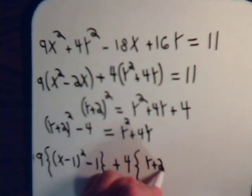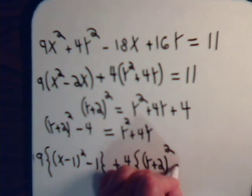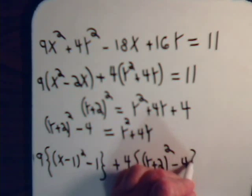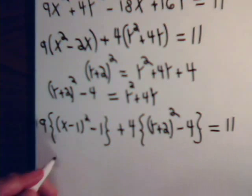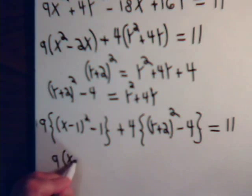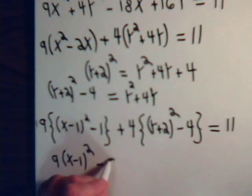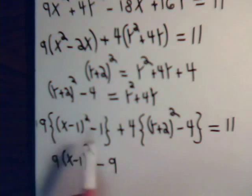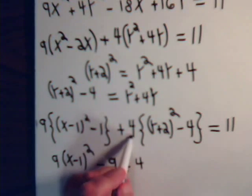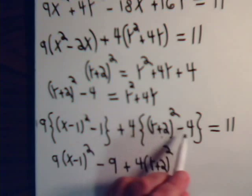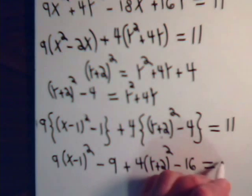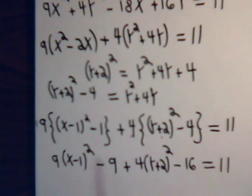y plus 2 squared minus 4 equals 11. Or here we have 9 times x minus 1 squared minus 9 plus 4, multiplying across here, times y plus 2 squared minus 16 equals 11. This is minus 25, bring it over here, that's plus 25, 25 plus 11 is 36.